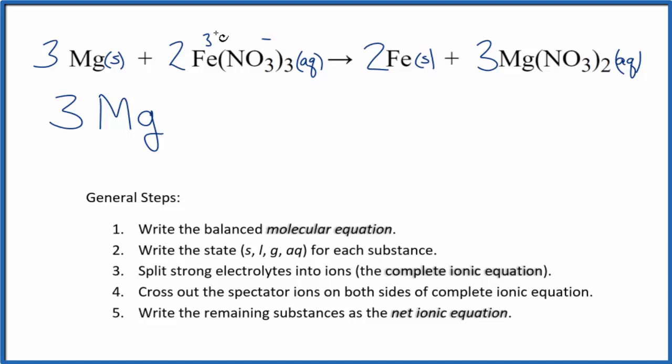It has to be 3 plus. So we have two of these iron 3 ions plus 2 times 3 nitrates, so 6 of the nitrate ions, and those are the reactants in the net ionic equation.